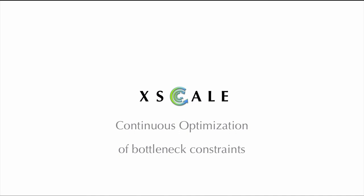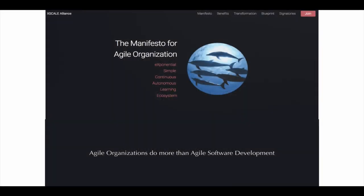This principle of continuous optimization will form the subject of the third of our series of six XScale Alliance webinars on the principles of agile organization. If you'd like to get involved, try XscaleAlliance.org. We look forward to your company next time.